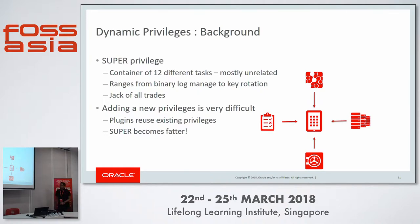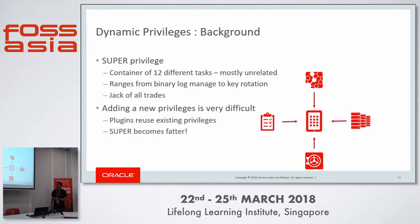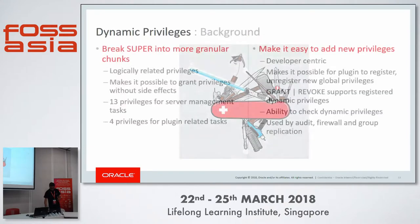Adding a new privilege is difficult — it requires changes at the code level and at the system table level, and it propagates very deep. So as we introduced new plugins that required privilege checks, developers would piggyback on the existing super privilege, making super grow even fatter. Plugins like audit, firewall, and more recently group replication all leverage super for privilege checks. This was becoming a problem, so we decided to resolve it.